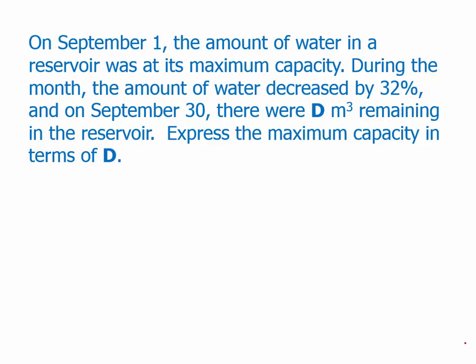On September 1st, the amount of water in a reservoir was at its maximum capacity. During the month, the amount of water decreased by 32%, and on September 30th, there were D cubic meters remaining in the reservoir. Express the maximum capacity in terms of D.